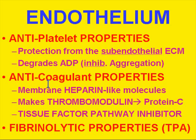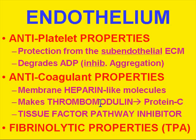Endothelium has anticoagulant properties: it makes heparin-like molecules — heparin is one of the most powerful anticoagulants we have. It also makes a compound called thrombomodulin, which is very crucial in the production of the body's most powerful natural anticoagulant, protein C. It also makes a tissue factor inhibitor. Last but not least, it makes TPA — tissue plasminogen activator — which is a fibrinolytic compound that dissolves or breaks down fibrin. These are all solidly good reasons why endothelium is the most powerful inhibitor of coagulation, because you've got blood on one side of it and ECM on the other.